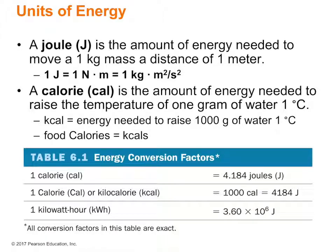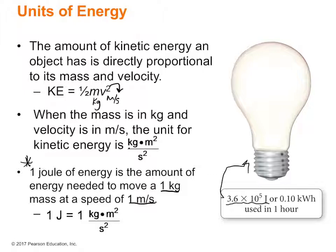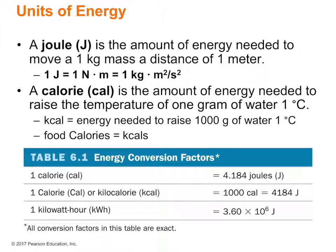For example, a 100-watt light bulb uses 3.6 times 10 to the fifth joules in one hour. Because of this, we often use the kilojoule in our energy discussions and calculations. There are 1,000 joules in one kilojoule.